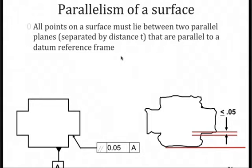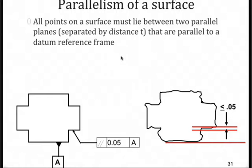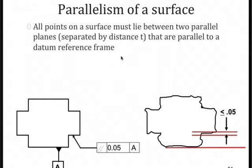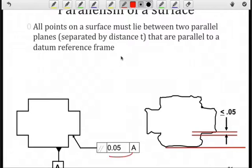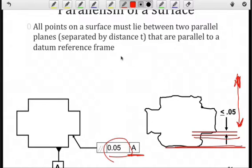As in the previous example, if we're trying to ensure that something is parallel in terms of a surface, we'll need datum A, and datum A will be a plane. Then we're going to create a tolerance zone corresponding to what we see in the feature control frame. Here we have a static tolerance zone width of 0.05 with respect to datum A. I take two parallel planes and try to enclose this surface to ensure it's parallel to datum A. Note there's no location constraint — I can translate the tolerance zone in any direction as long as I remain parallel to datum A.